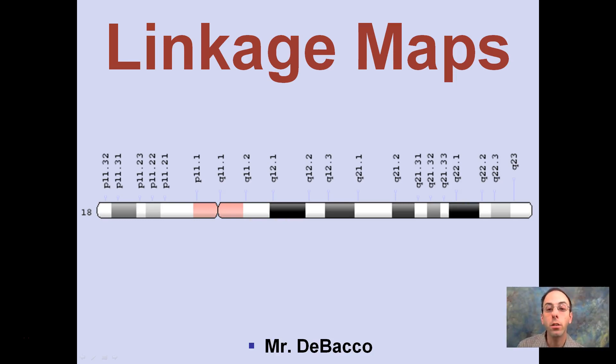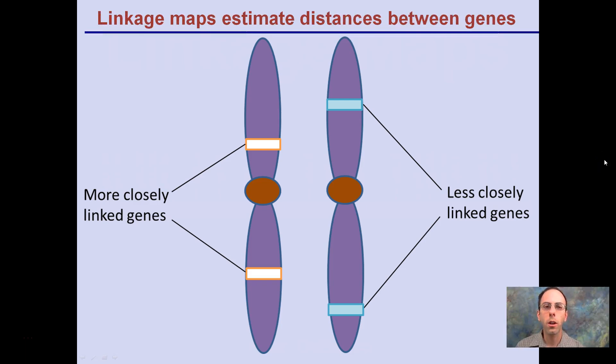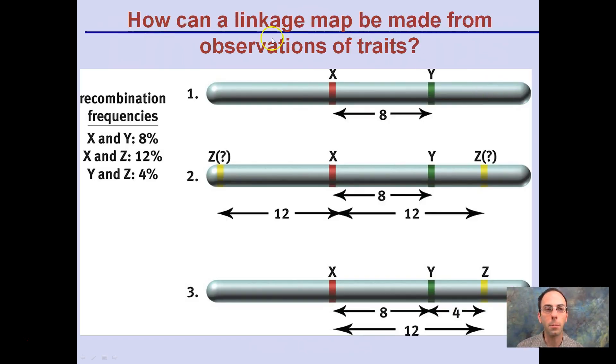Here we're going to look at linkage maps in relation to genes located on the same chromosome. Let's go through an example here. So first off, this should make basic sense.